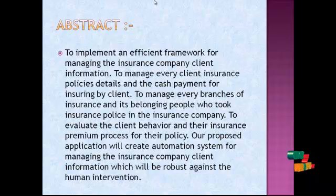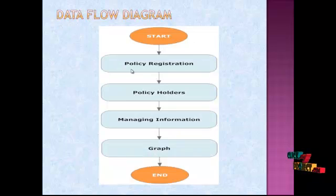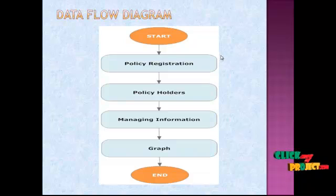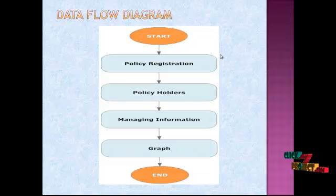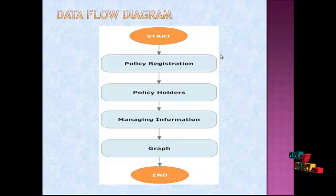Let's see the data flow diagram of our project. The first component is policy registration, which is carried out by users. The user can register to acquire a new policy from the insurance company — that is, they can acquire any policy of their need without any restriction. They need to provide all valid information.